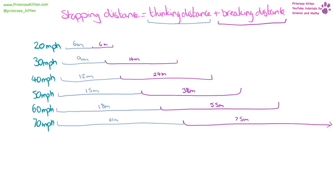Stopping distance is made up of thinking distance and braking distance. The faster you go, the greater both distances. For thinking distance, your brain must see the image, send a signal, process it, and send the signal to your foot — and the faster you travel, the more distance you cover in that time. Factors affecting thinking distance: alcohol and illegal drugs negatively affect it, caffeine positively, and tiredness negatively.